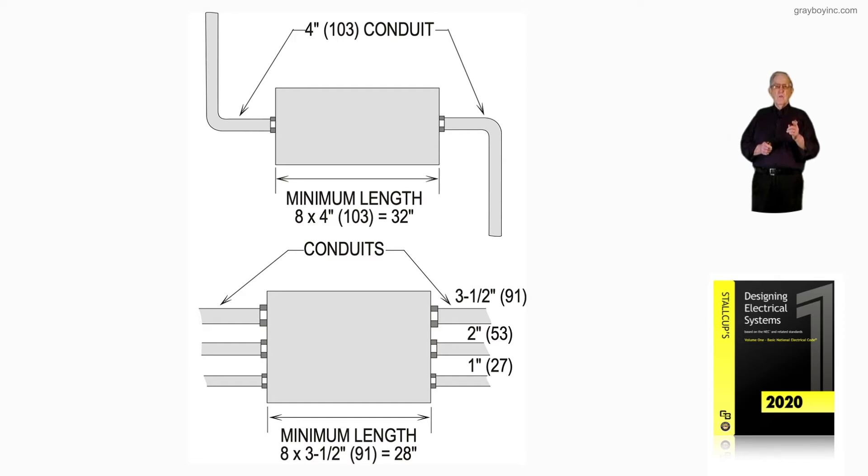If you had four-inch on one side and three-inch on the other side, then you'd use the largest, which would be four, and it'd be eight times four, which would be 32 inches.